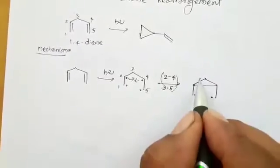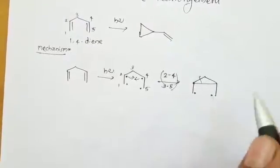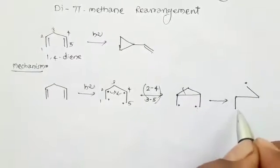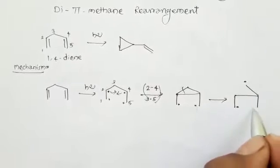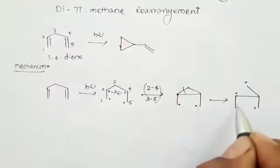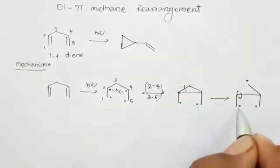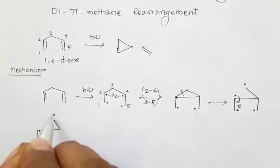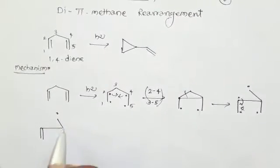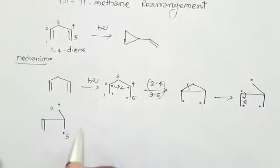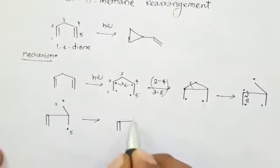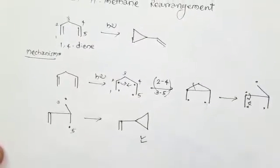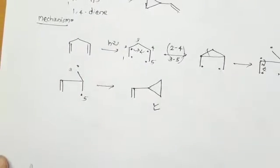Then either this side or this side will break. First, we will break this side. We get three radicals. Then there is a formation of another radical. Here, position 5 and position 3 — we combine them. This gives us the final product of the Di-π-methane rearrangement reaction.